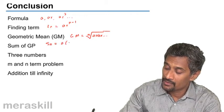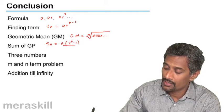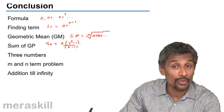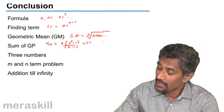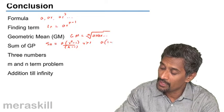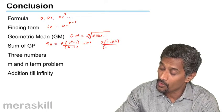SN is a into r raised to n minus 1 upon r minus 1 when r is greater than 1, and it is going to be a into 1 minus r raised to n upon 1 minus r when r is less than 1.